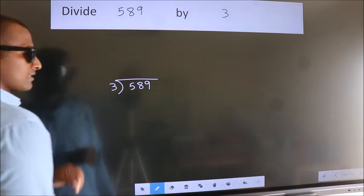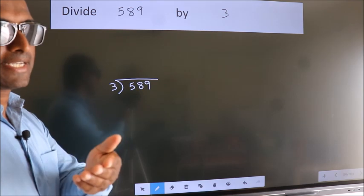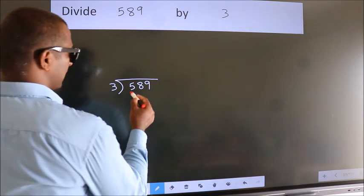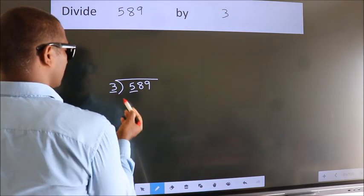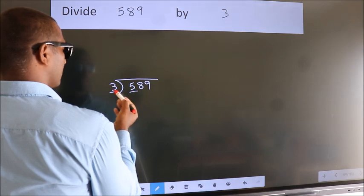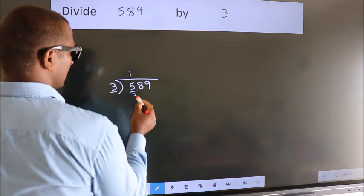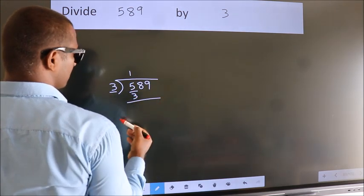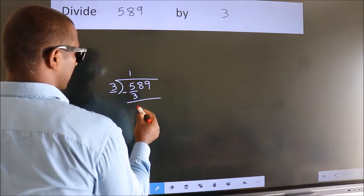This is your step 1. Next, here we have 5, here 3. A number close to 5 in 3 table is 3 ones 3. Now, we should subtract. We get 2.